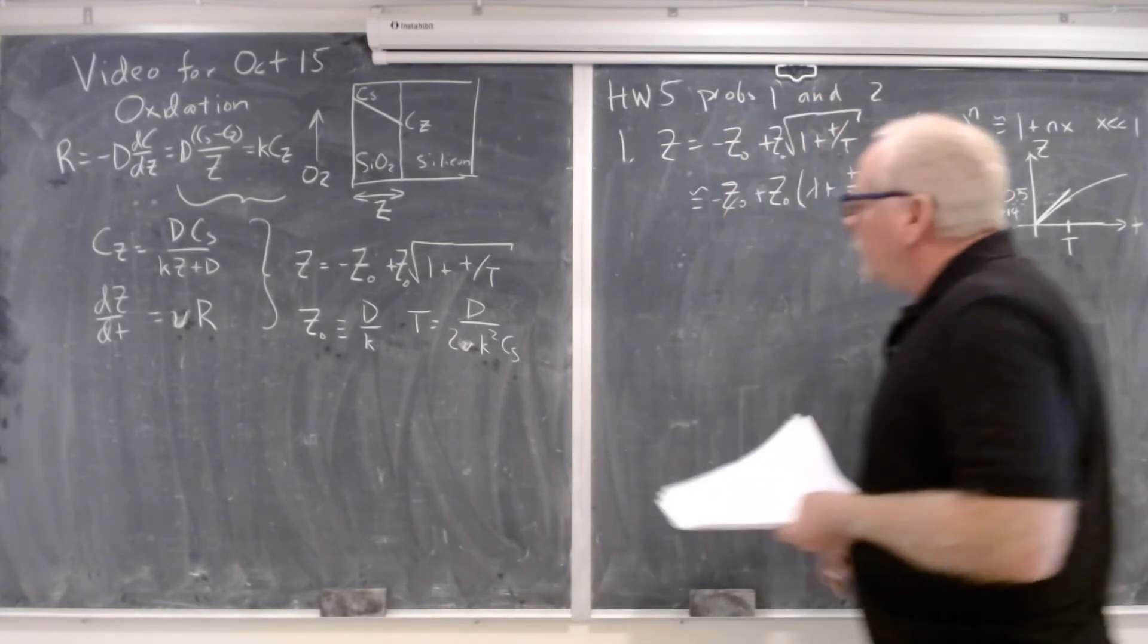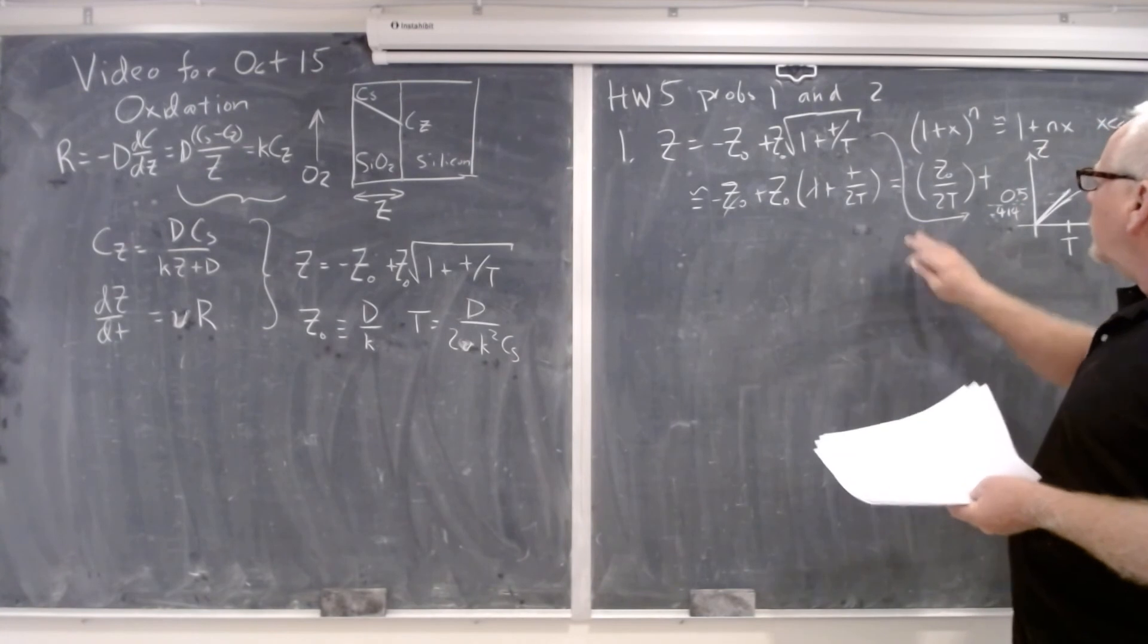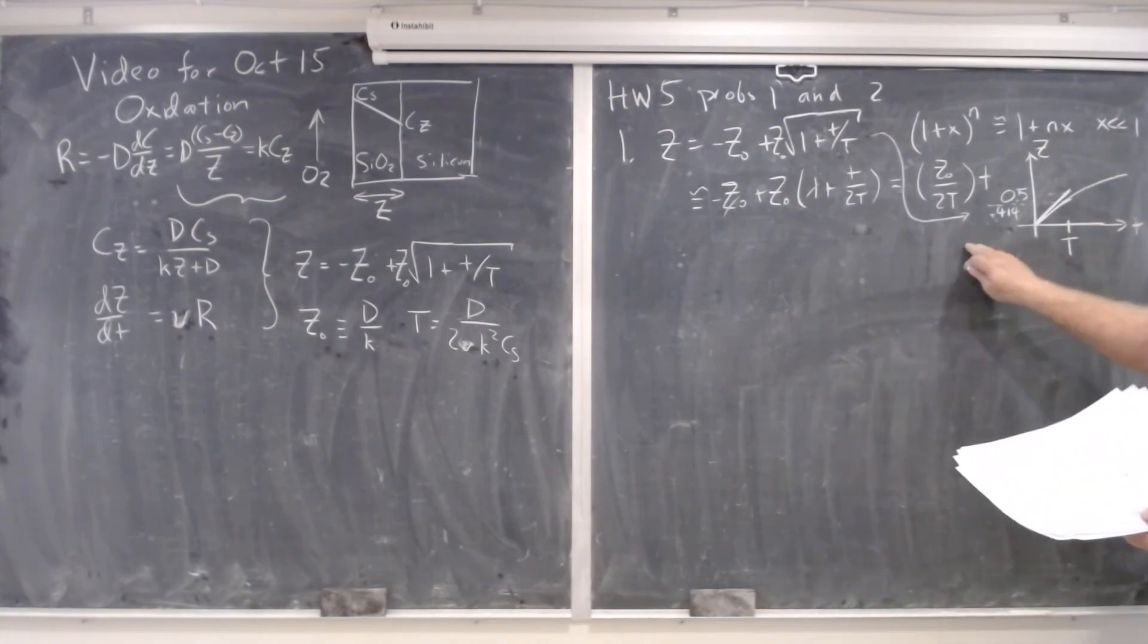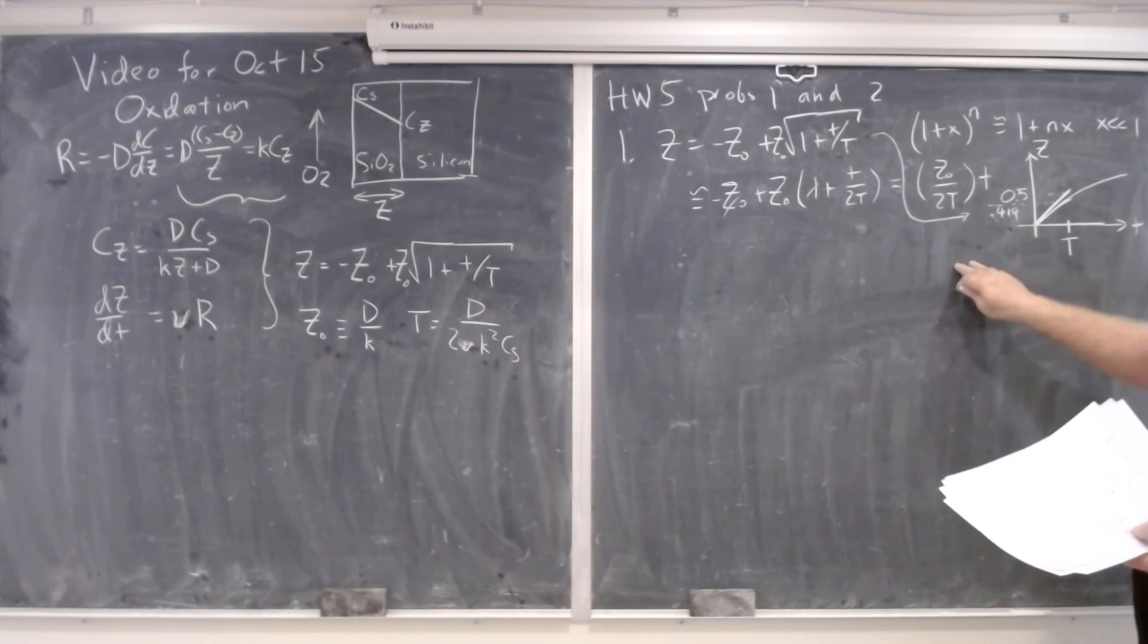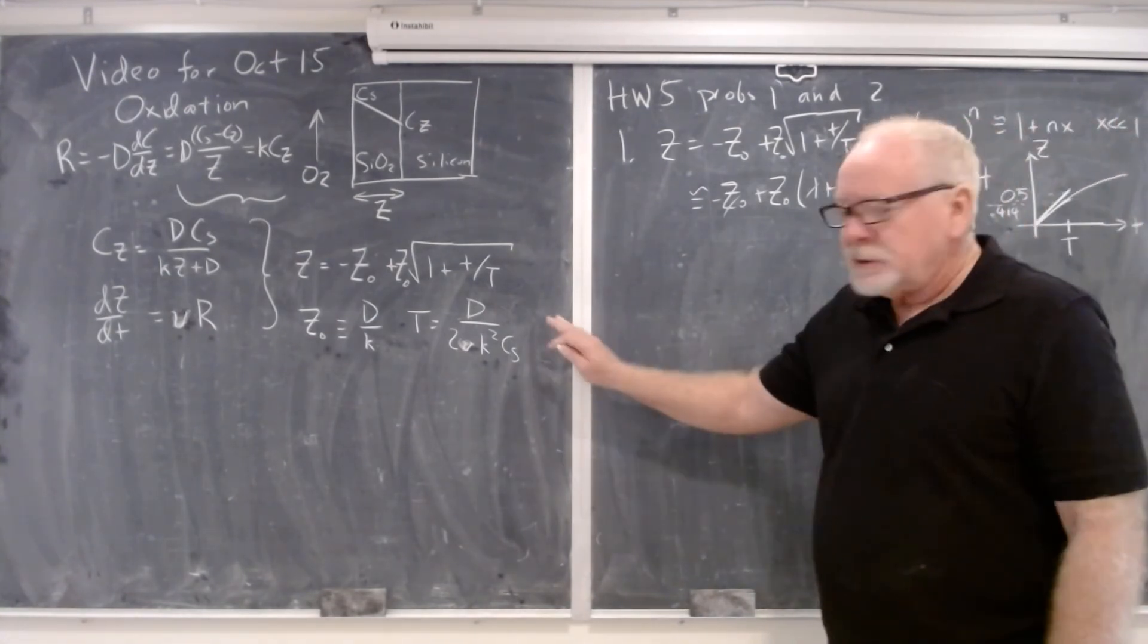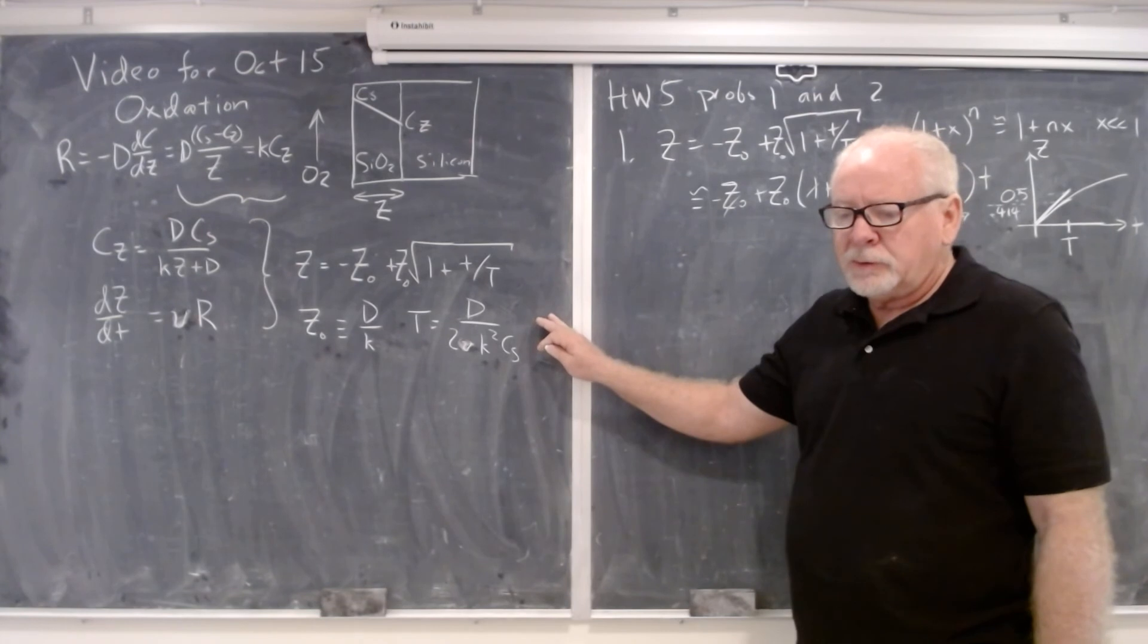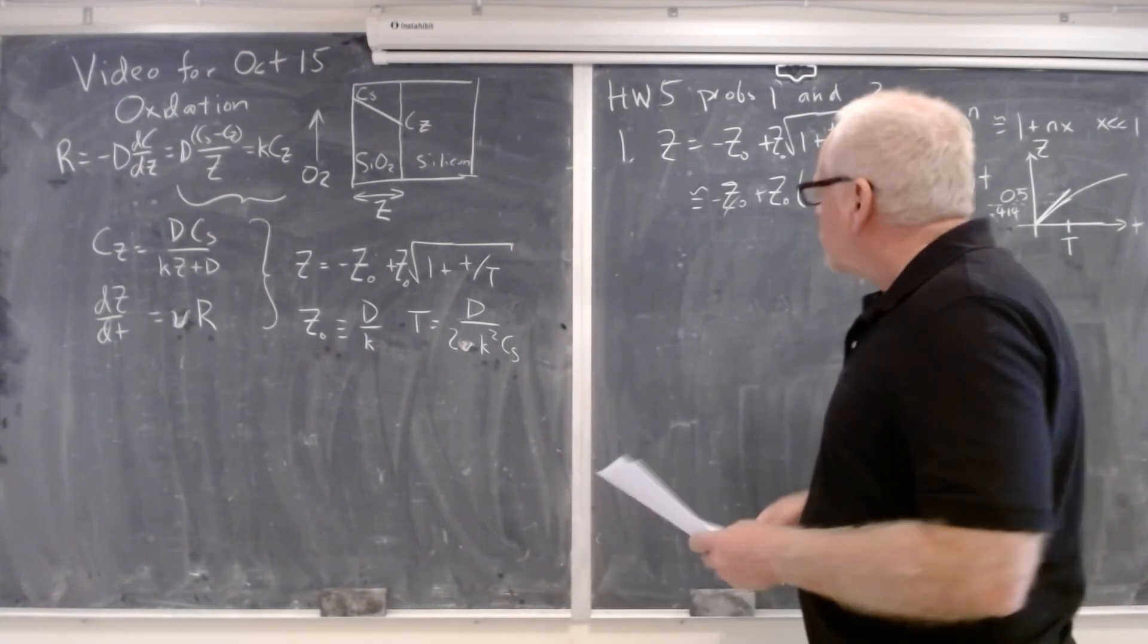The point is that capital T, this characteristic time, goes as D over K squared. And so basically as K goes up, that characteristic time goes down. And the only meaning between Z naught and T can kind of be derived here, which is that in the linear approximation at a time equal to T, the oxidation depth is equal to Z naught over 2 roughly. So there's no special meaning, it's just a mathematical tool for collecting terms so there's fewer things that you have to know in order to solve the problem.